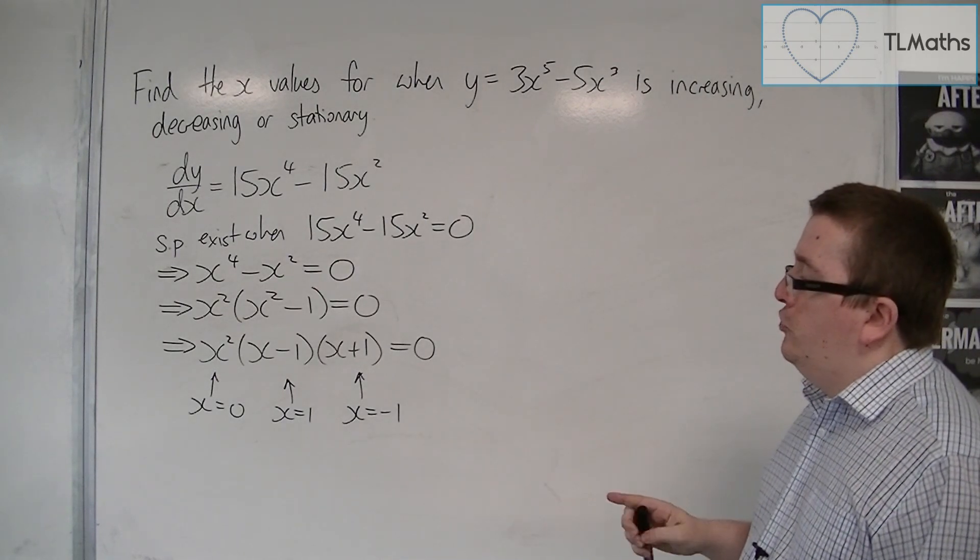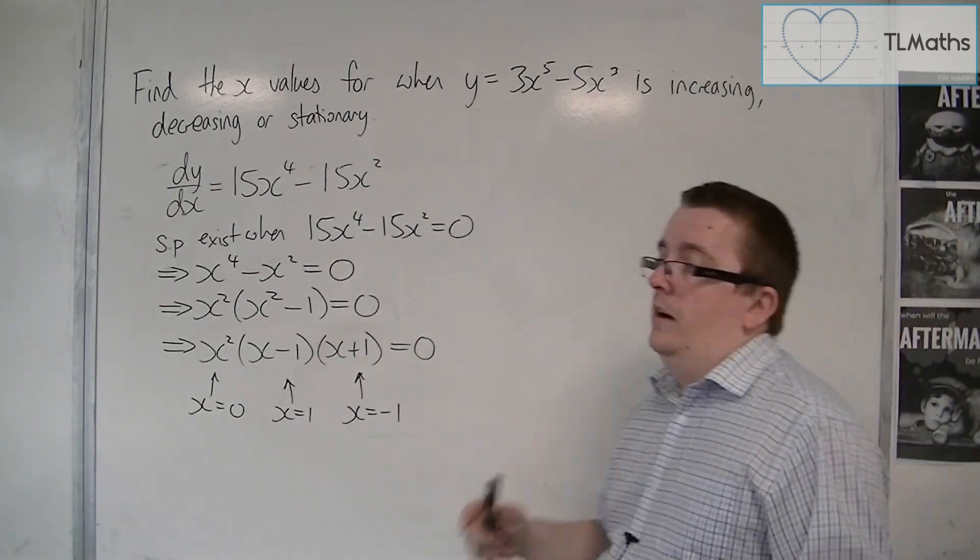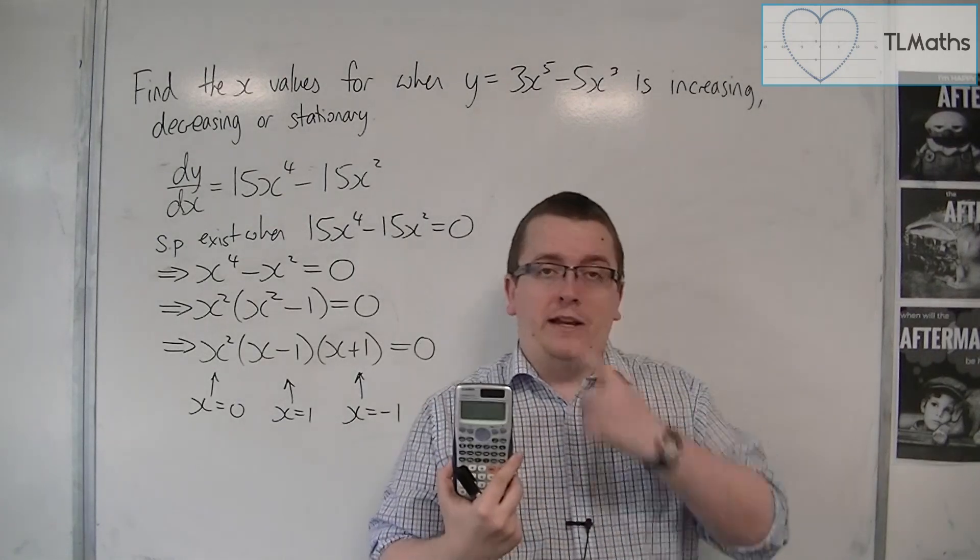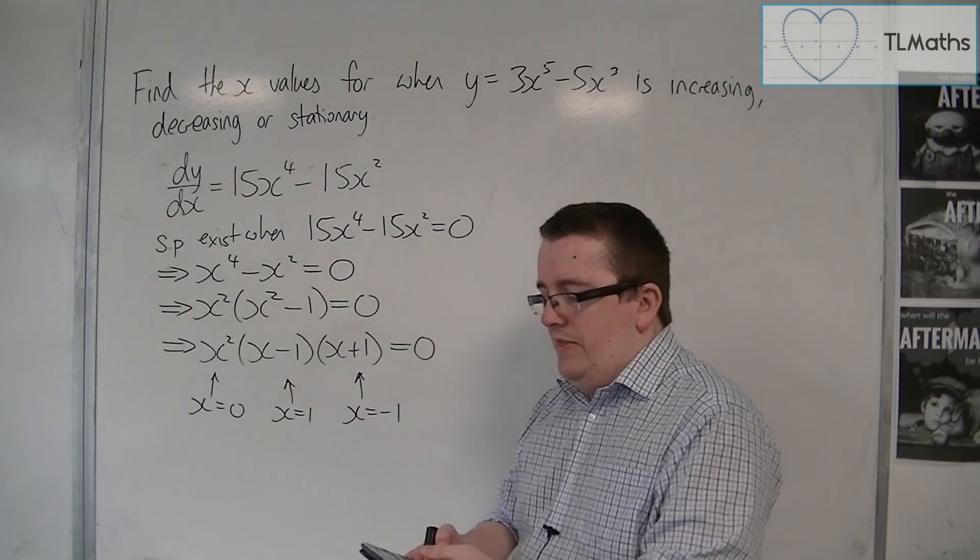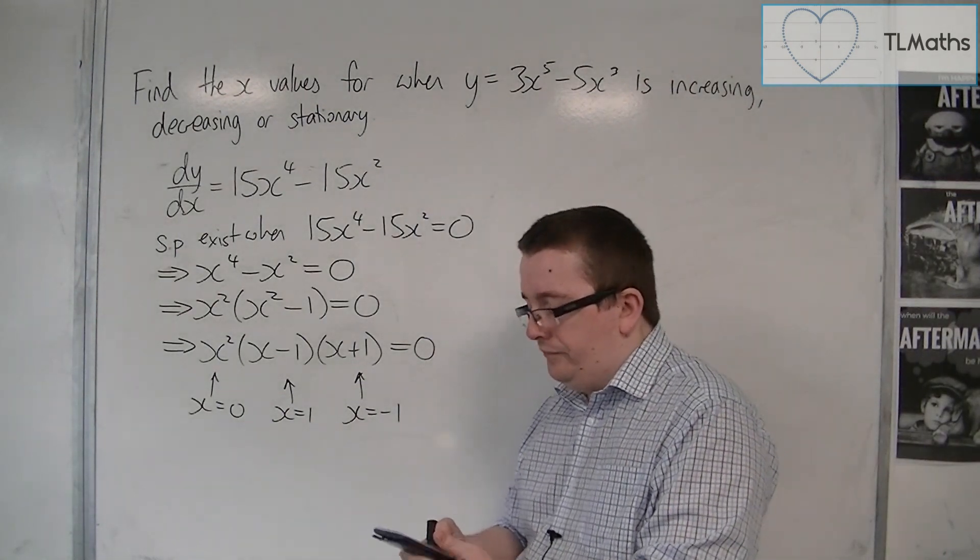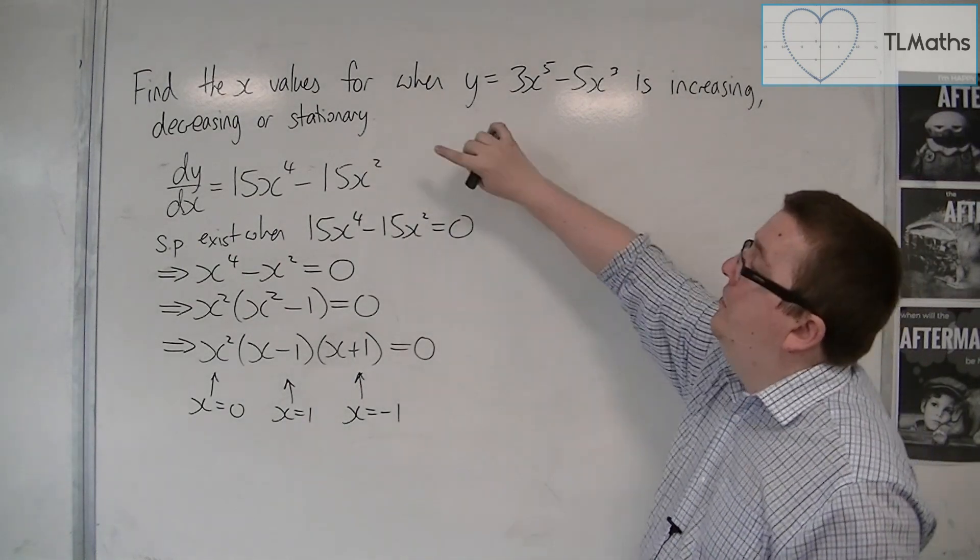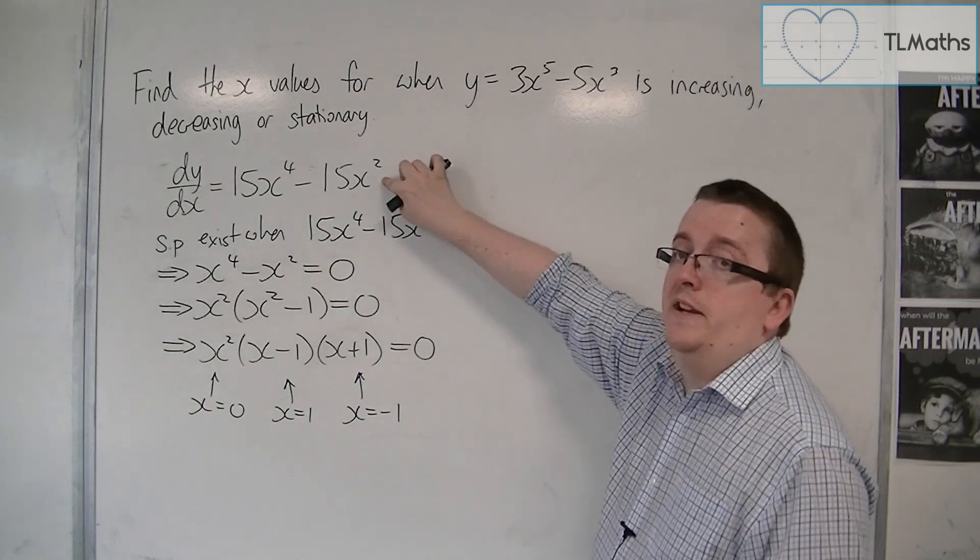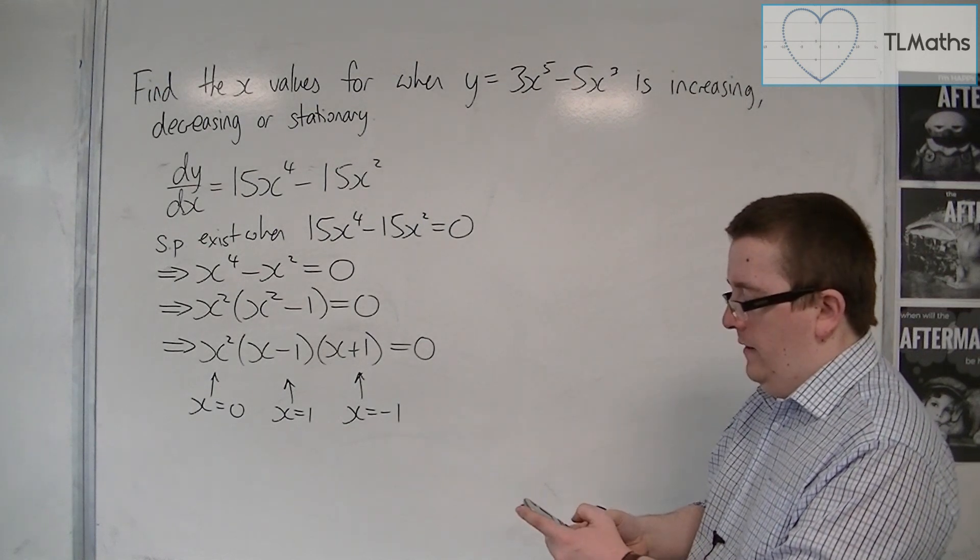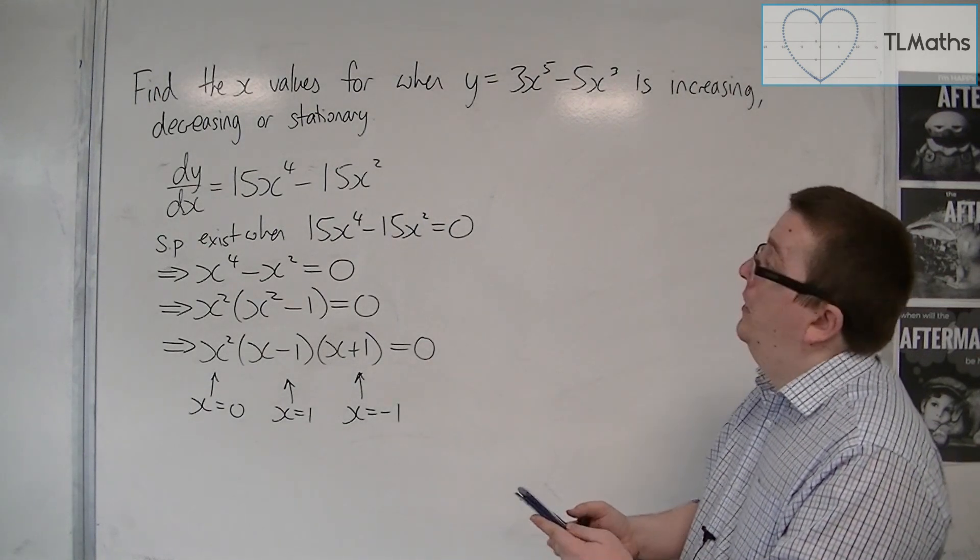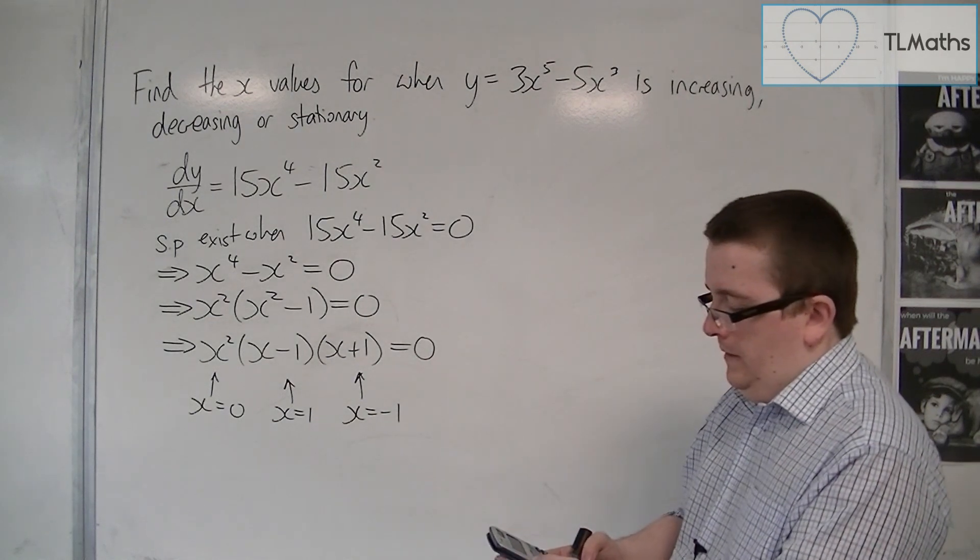Now, because we have these three stationary points, and I don't know what this curve looks like, I'm going to go straight to the calculator. So we're going to use the same process as before. You want to get it into mode, and then number 7 for table brings up this f of x equals. We want to type in this. We want to type in the dy by dx. So 15 times alpha x to the power of 4, take away 15 times alpha x squared. Press equals.